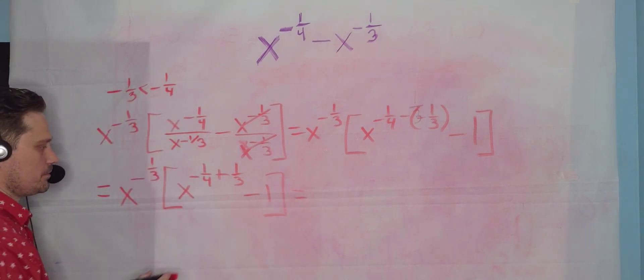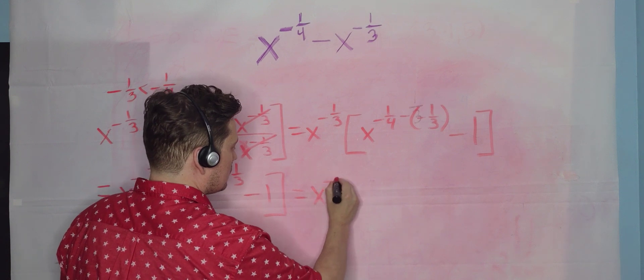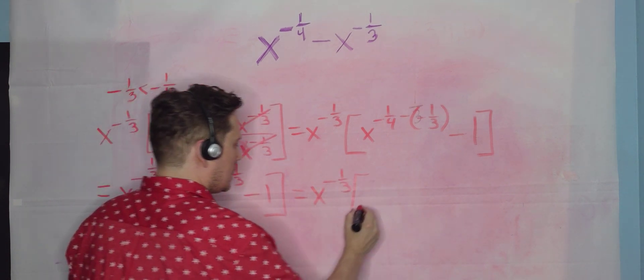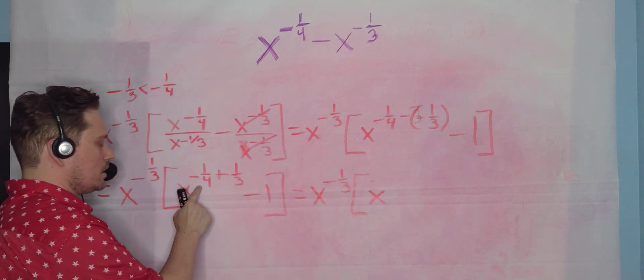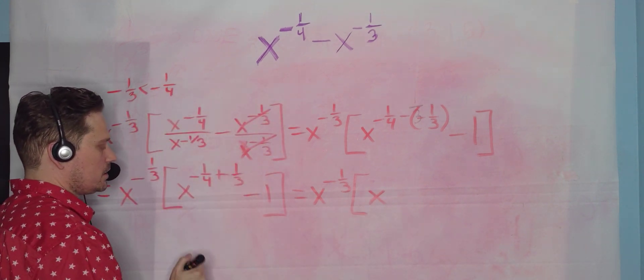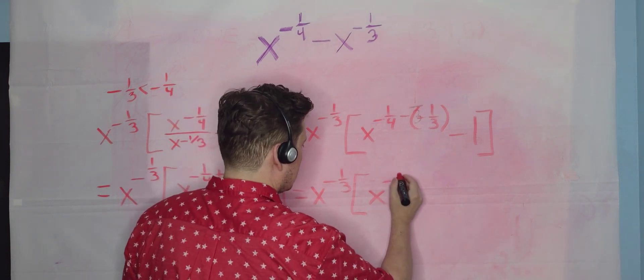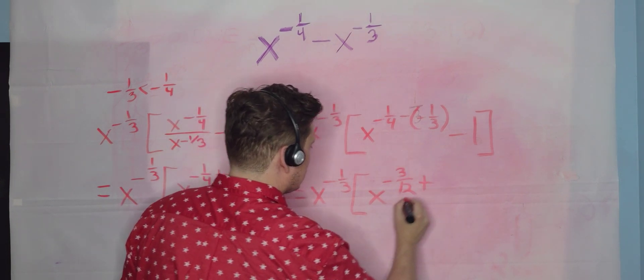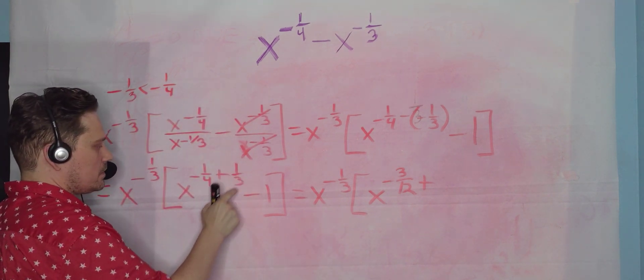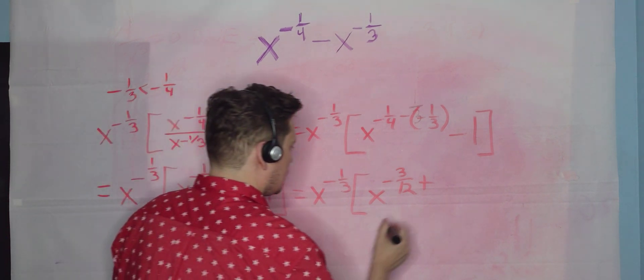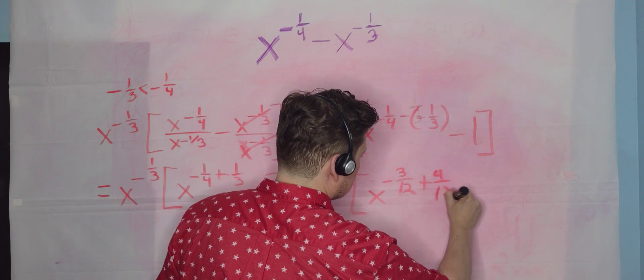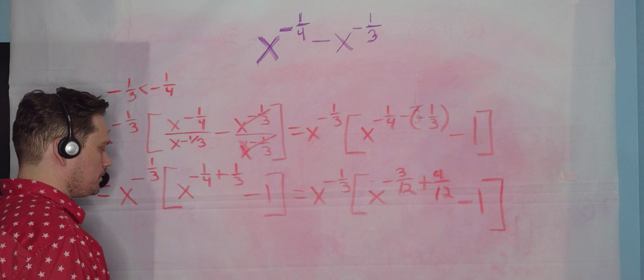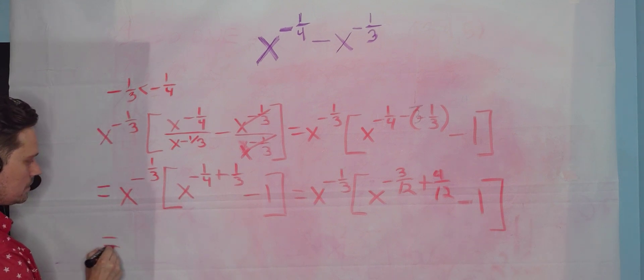So x to the negative one-third, bracket, convert each of these to twelfths. So you're going to multiply by three over three, four over four on this one. So minus basically three-twelfths, plus, again multiply this by four over four, which is one. So it's going to give you four-twelfths, like this. And then minus one, close bracket, continue down over here.